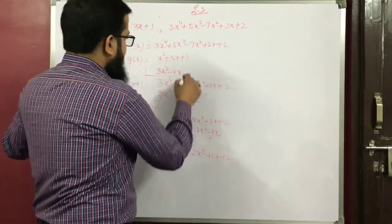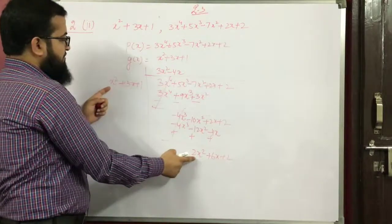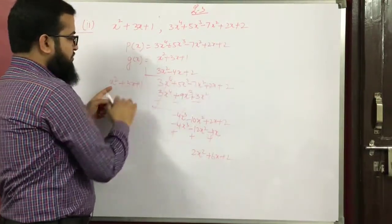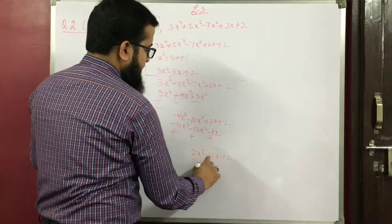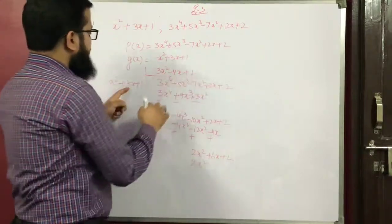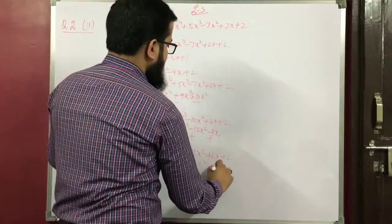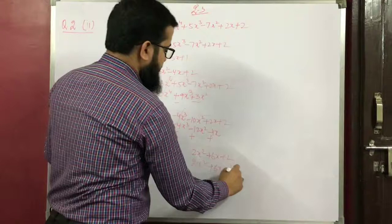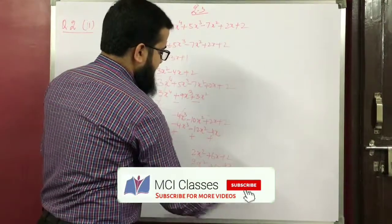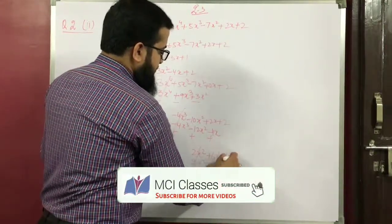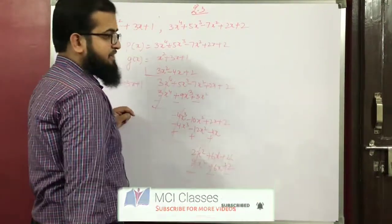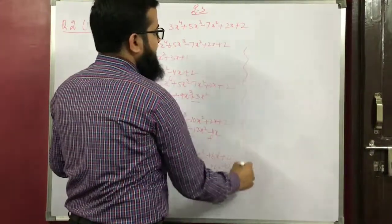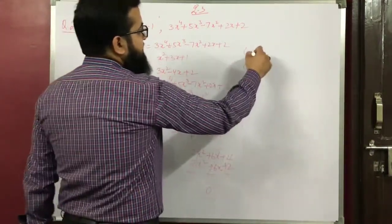Now multiply g(x) by 2: 2 times x² is 2x², 2 times 3x is 6x, 2 times 1 is 2. After subtraction, everything cancels and we are having 0 only as the remainder.